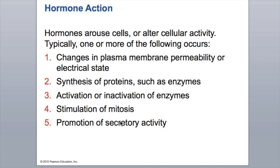This typically happens in one or all of the following ways: changes in the cellular membrane permeability like we see in the membrane potential of neurons; creation of proteins or enzymes as needed; inactivation or activation of enzymes; mitosis — stimulating cell division or stopping it; or hormones that will increase secretory activity, for example in bones, looking at calcitonin increasing the bone-building activities.